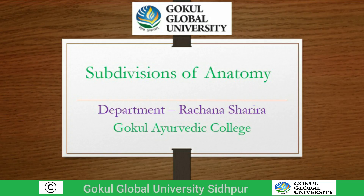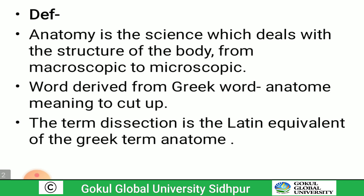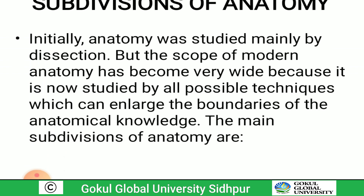Hello everyone. Today we will learn about the definition of anatomy and its branches or subdivisions. Anatomy is a science which deals with the structures of the body, from microscopic to macroscopic. It is derived from the Greek word meaning 'cut up.' The term dissection is the Latin equivalent of the Greek term anatomy.